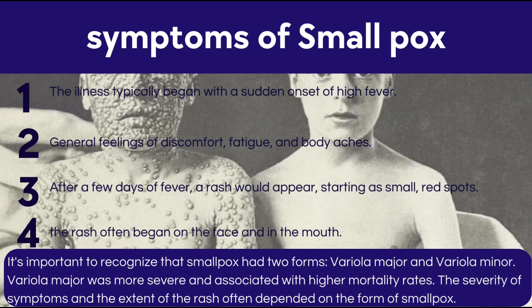Smallpox had two forms: variola major and variola minor. Variola major was more severe and associated with a higher mortality rate. The severity of symptoms and the extent of the rash often depended on the form of smallpox — so that is just a small warning to keep in mind.